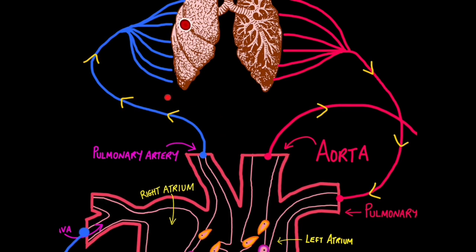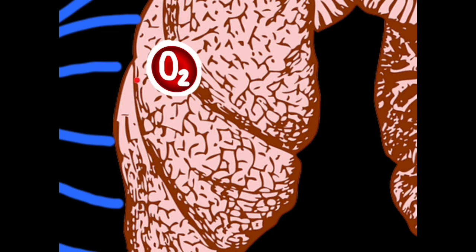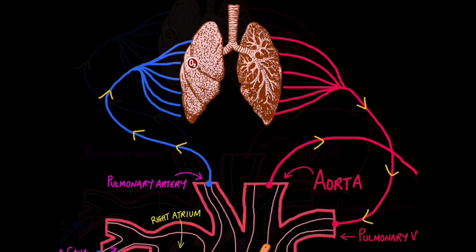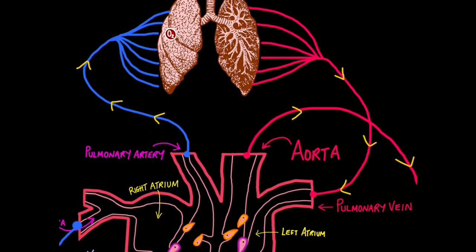Now all arteries transport blood away from the heart, but only the pulmonary artery transports deoxygenated blood away from the heart. And that's because it's transporting it to the lungs to pick up oxygen. So our red blood cell has picked up oxygen from the lungs and can now continue along its journey. If you remember, that happens in the alveoli.